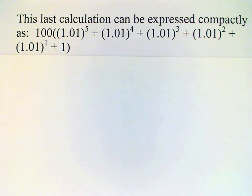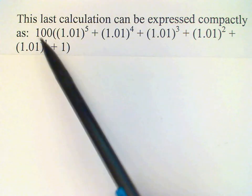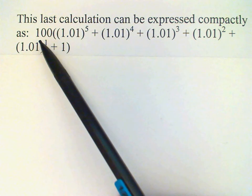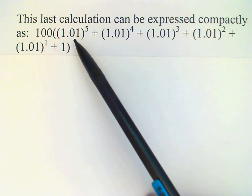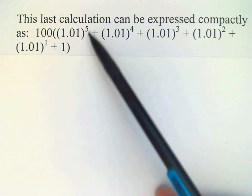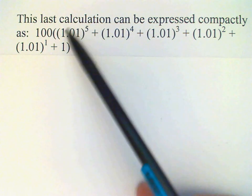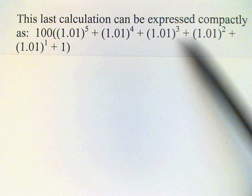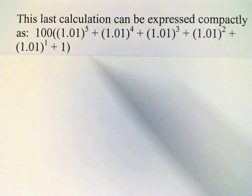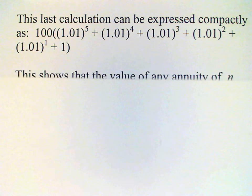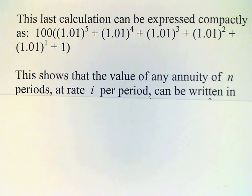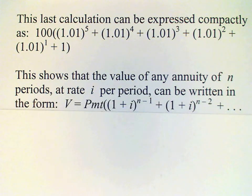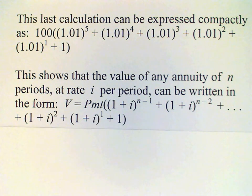The entire calculation can be summarized in this formula here. We have the monthly payment — that's the hundred — and then the compound amount for each of the deposits that's made. This represents the compound amount for the first month's deposit, the second month, the third, fourth, fifth, and sixth month, which earns no interest. This gives us a way to generalize to an annuity of N periods at a rate of I per period.